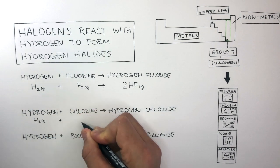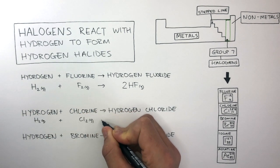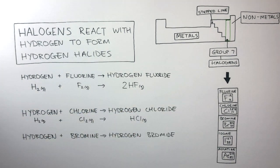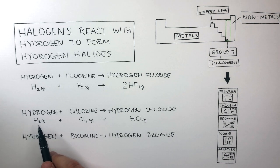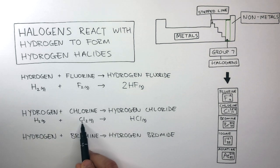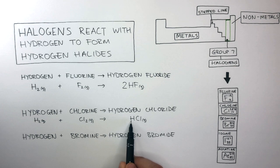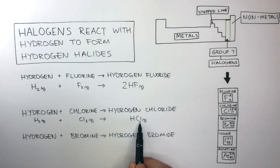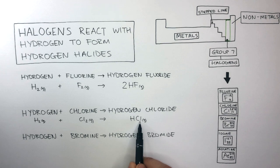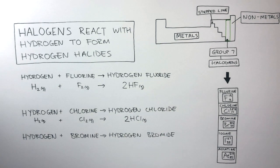H₂ reacts with Cl₂ forming HCl. Now let's balance this. On the left there are two hydrogen atoms and two chlorine atoms, and on the right there is one hydrogen atom and one chlorine atom. To have two hydrogen and two chlorine atoms on both sides, we put a 2 in front of HCl. This is now balanced.